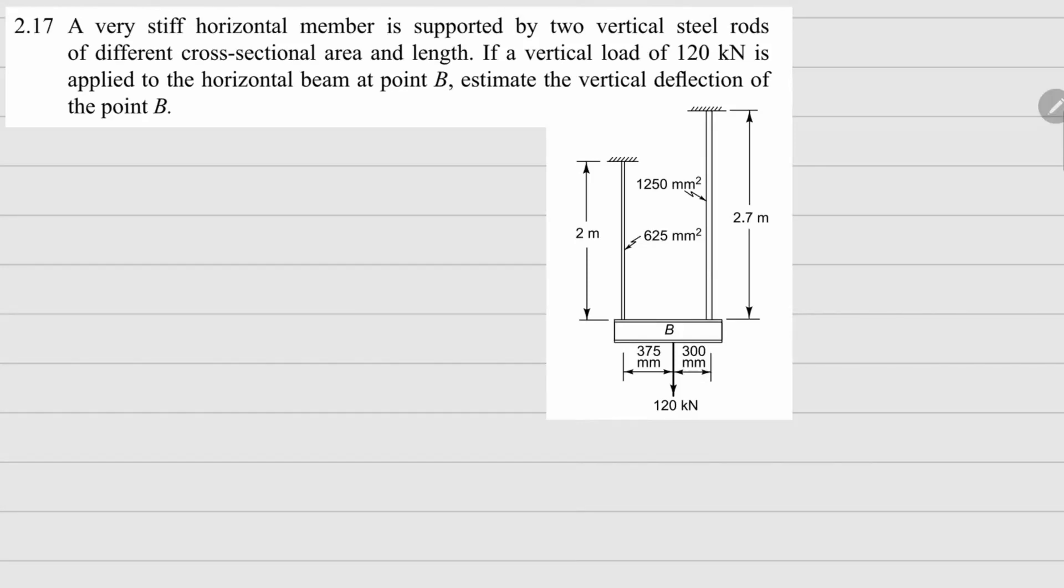This one is 2.17. Here there is a very stiff horizontal member which is right here, and this is supported by two vertical steel rods, one on this side, one on the other side. There's a load of 120 kilonewtons applied at point B right here. We need to find out the deflection at point B.